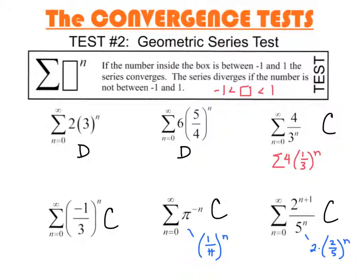The geometric series is a pretty special one for us. Not only is it one that we can identify pretty easily — we're looking for a number raised to the nth power — but it's also one of the very few series where we can not only tell if it converges or diverges, but also find what it converges to, meaning the sum of the infinite series. In another video, I'll show you a quick proof of that and examples of how we can find that sum.